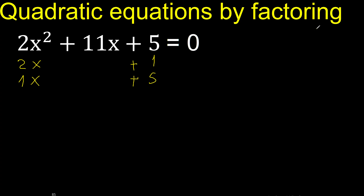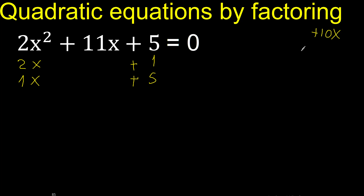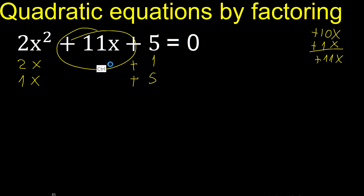x here. 1 multiplied by plus 1 is plus 1, x — plus 11x equals. Therefore it is correct.